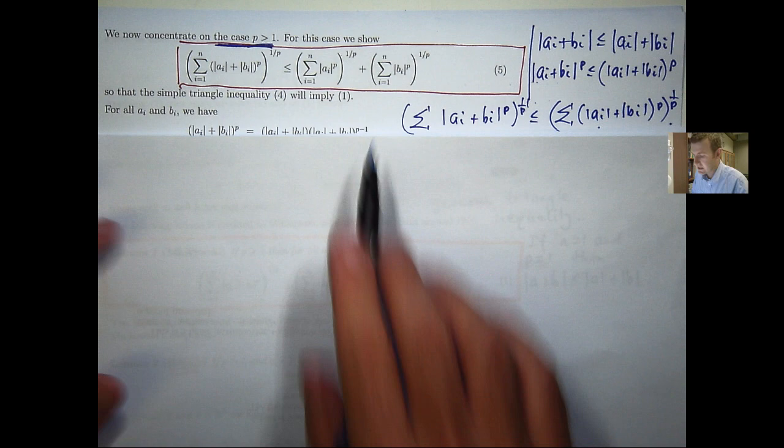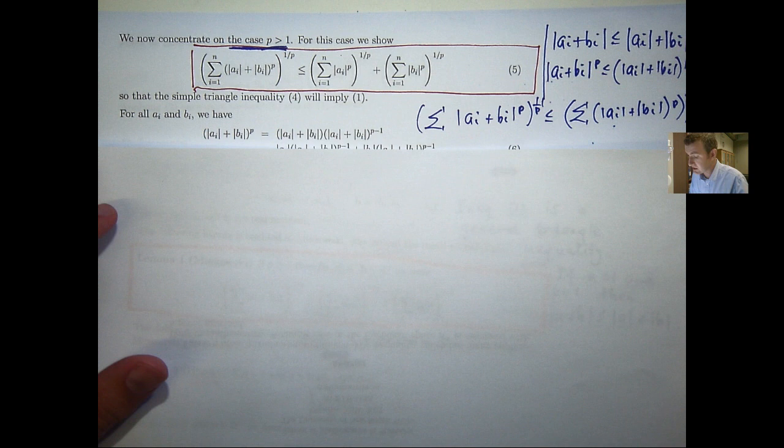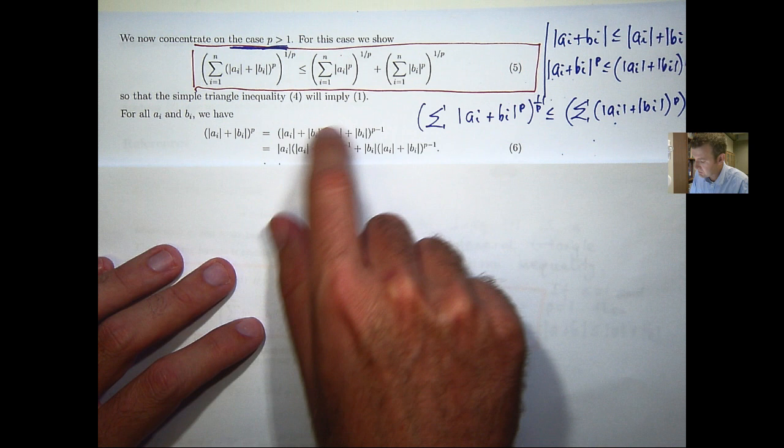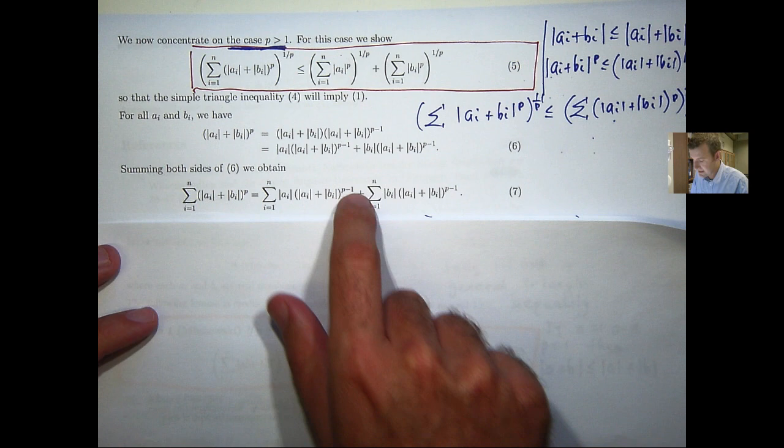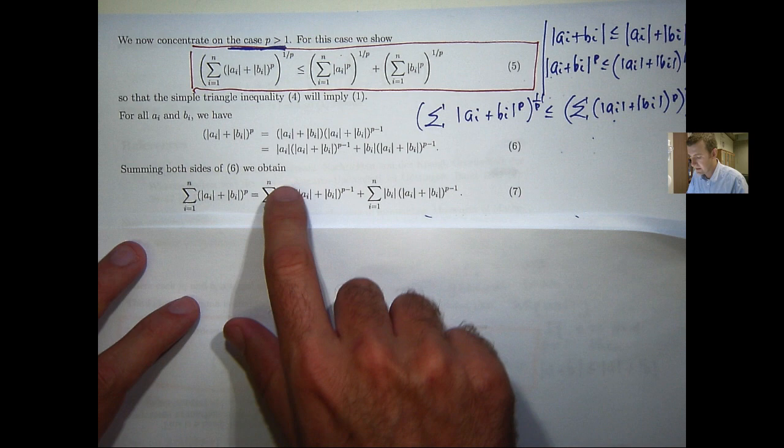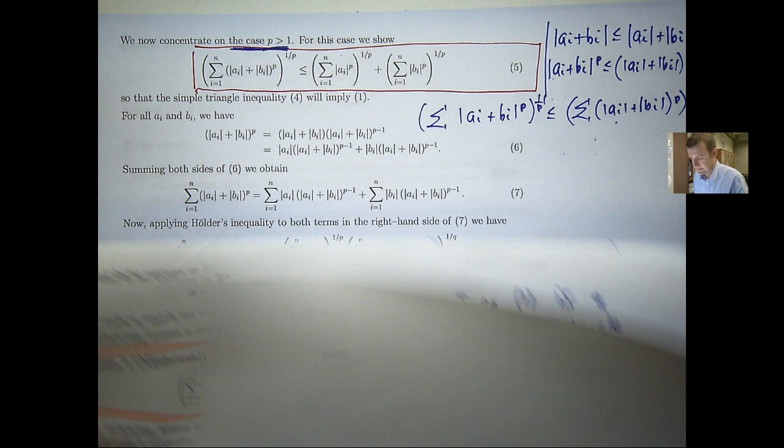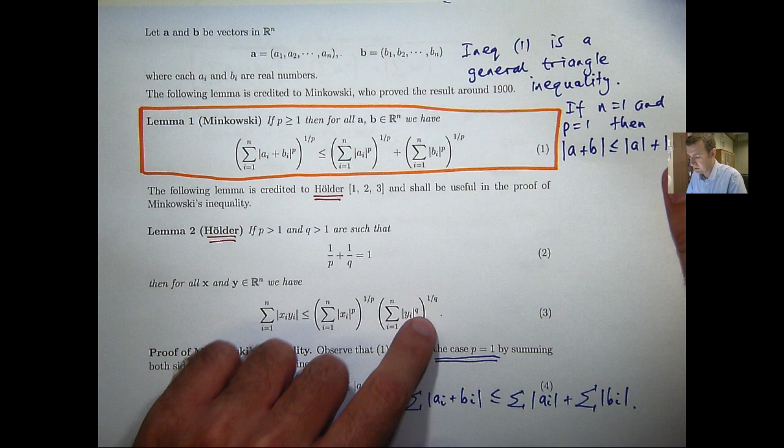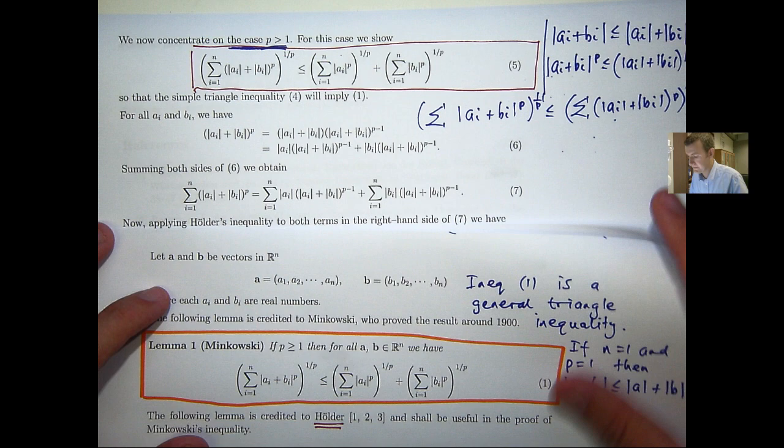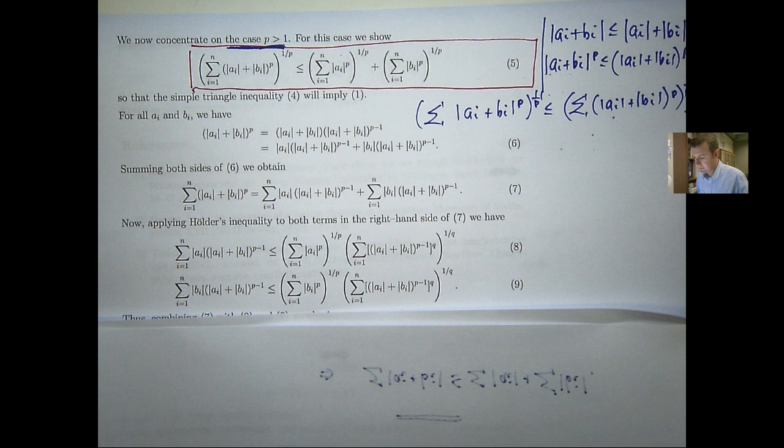So let's get to work proving inequality 5 here, and it's just simple algebra really. So we start with this and then we can break it up and expand the first bracket. Then what we can do is sum both sides of this expression. And now what we can do is apply Holder's inequality to this sum and this sum separately. We've got a product in here and we're going to apply Holder's inequality to this sum and this sum. Well, if you do that, then you'll come up with the following.